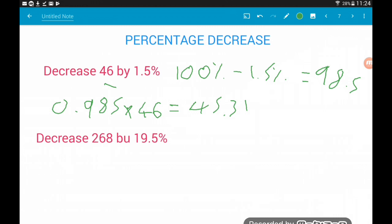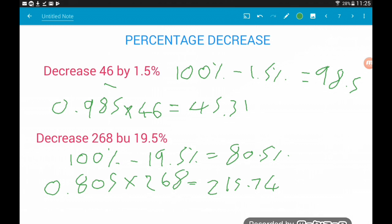And then let's do the next one. Decrease 268 by 19.5%. So we want to do 100, which is our 268, take away 19.5%. Now that will leave us with 80.5%. So we're finding 80.5% of 268. Let's divide 80.5 by 100, we get 0.805. Times that by 268, smash that in your calculator and make sure you get 215.74. Okay, so that's how we do percentage decreases. Now on the next page I'm going to let you have a go by yourself. Pause the video, see how you get on with those four questions.